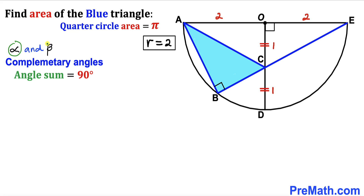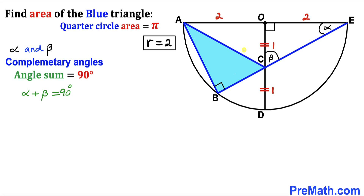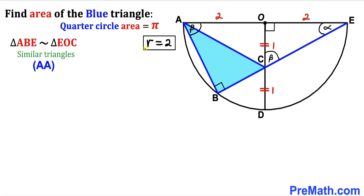Let's assume that alpha and beta are two complementary angles — in other words, alpha plus beta equals 90 degrees. If this angle is alpha, then in this small right triangle, since this angle is 90 degrees, the remaining angle must be beta. Now focusing on the big right triangle ABE: this angle is alpha, this angle is 90 degrees, so this whole angle is beta. Therefore, big right triangle ABE is similar to small right triangle EOC by the angle-angle similarity theorem.